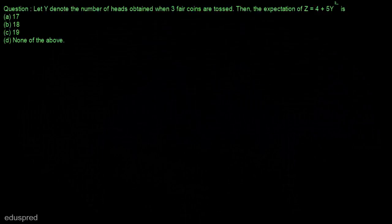In this video I am going to solve this question. Let Y denote the number of hits obtained when three fair coins are tossed. We have to find the expectation of Z, where Z is equal to 4 plus 5Y squared, and these are the options given to us.